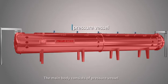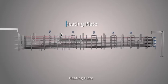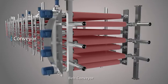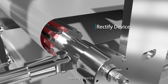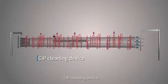The main body consists of pressure vessel, heating plate, belt conveyor, rectified device, and CIP cleaning device.